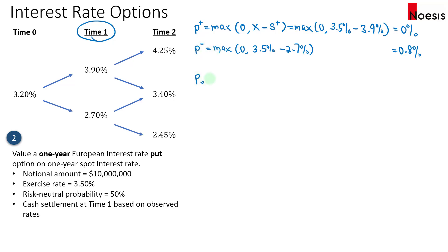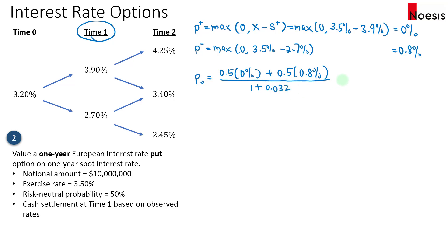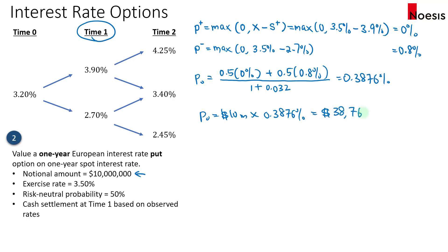We then calculate the put option value at time zero by taking the risk-neutral probability multiplied by the respective put option payoffs of 0% and 0.8%. After taking the weighted payoff, we discount it back to time zero using the one-period interest rate of 3.2%. That gives us 0.3876%. Since the notional is $10 million, we take 10 million times 0.3876%, giving a put option price of $38,760.